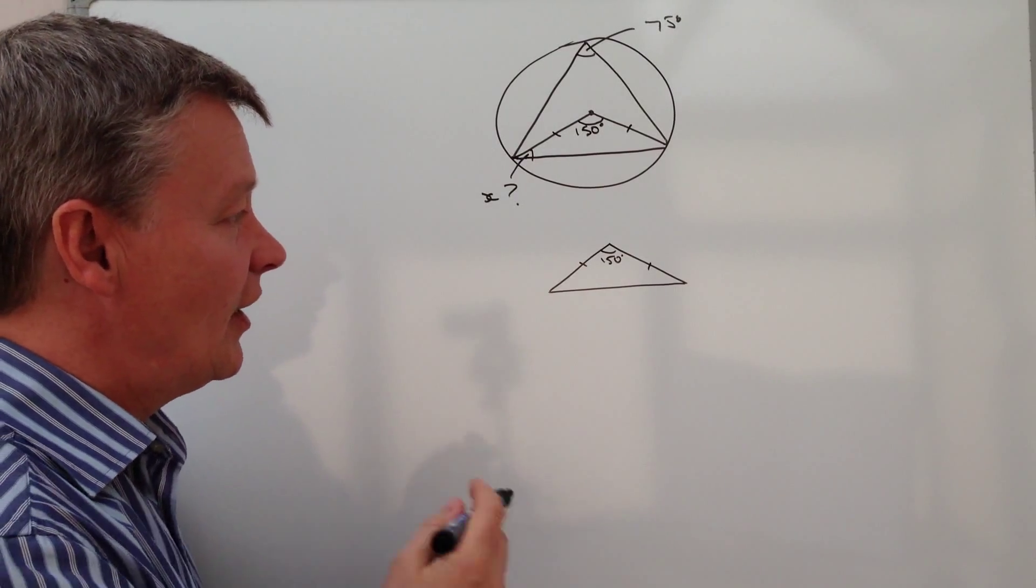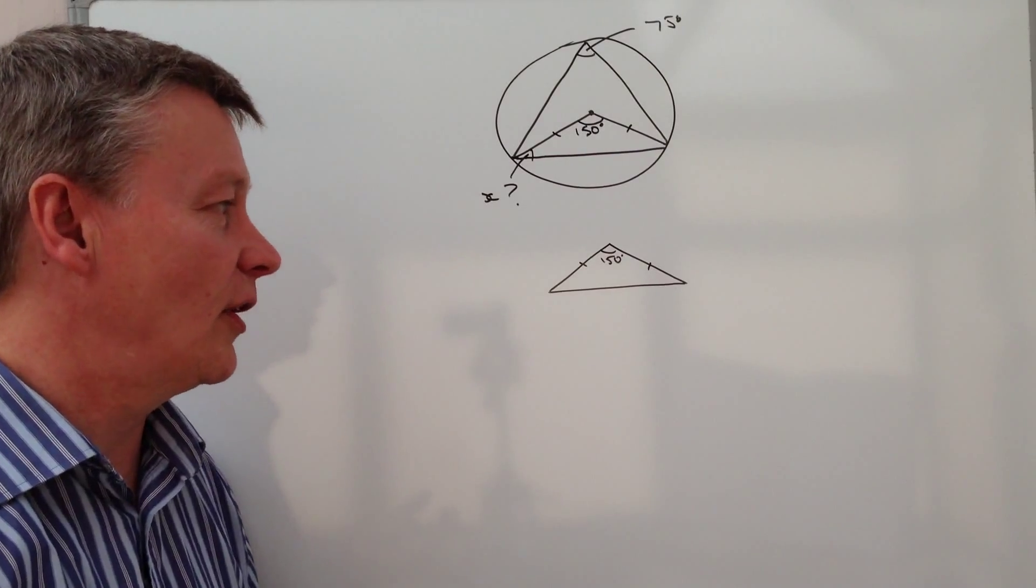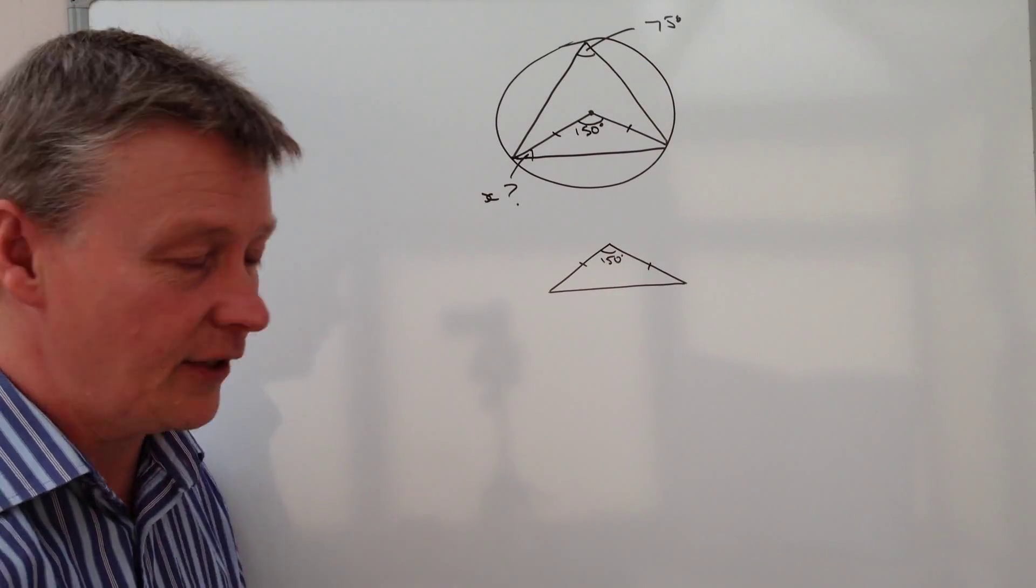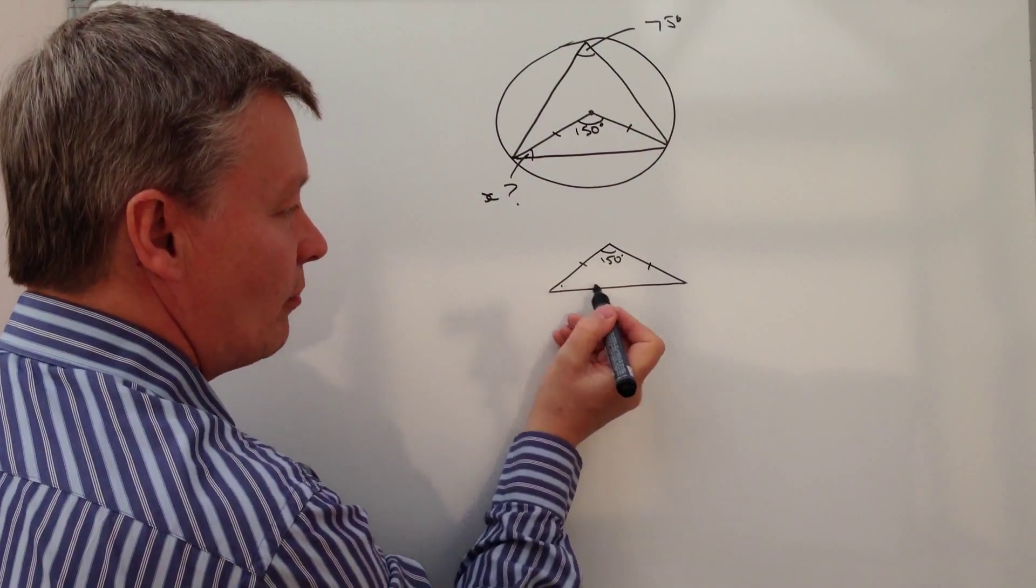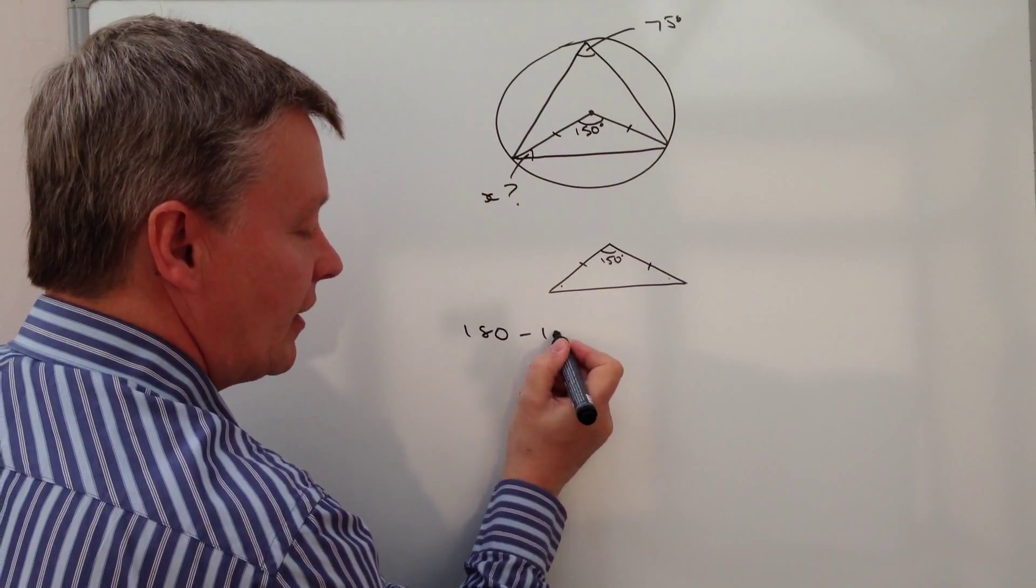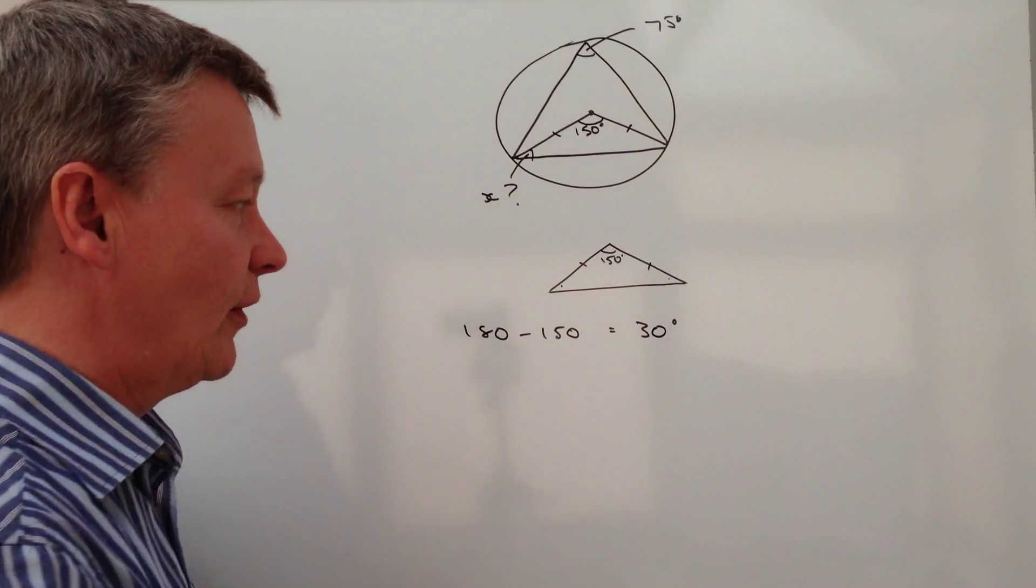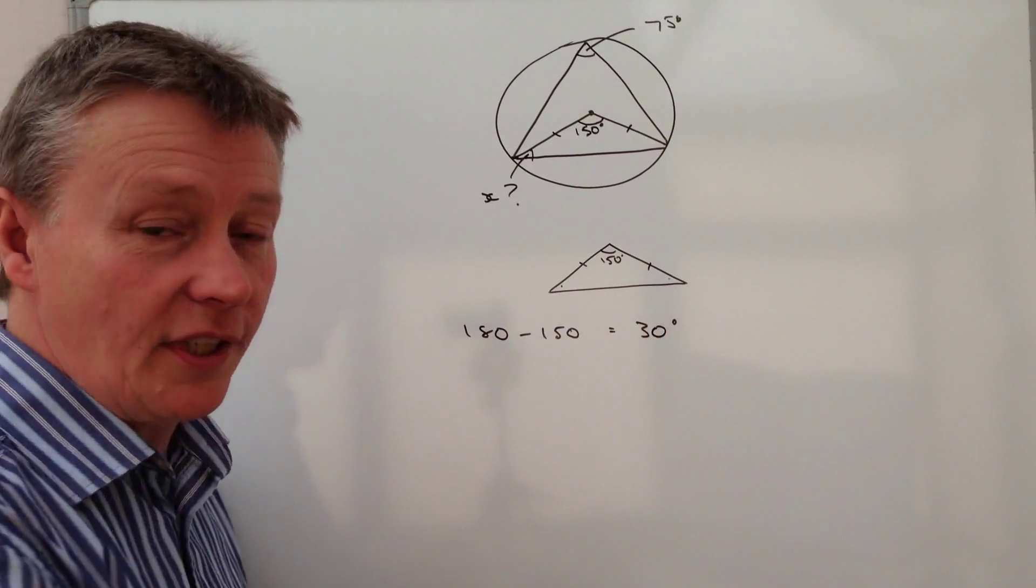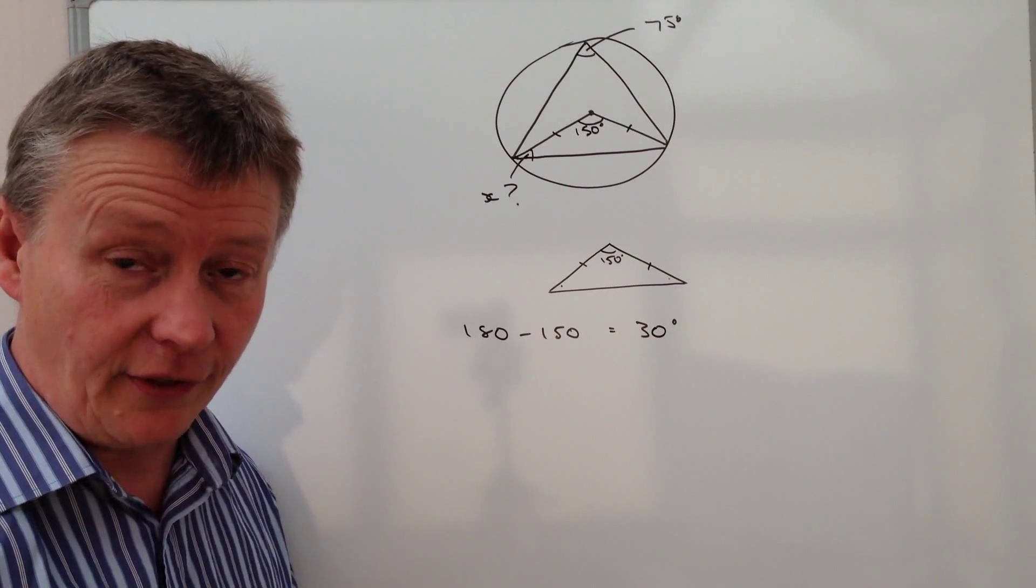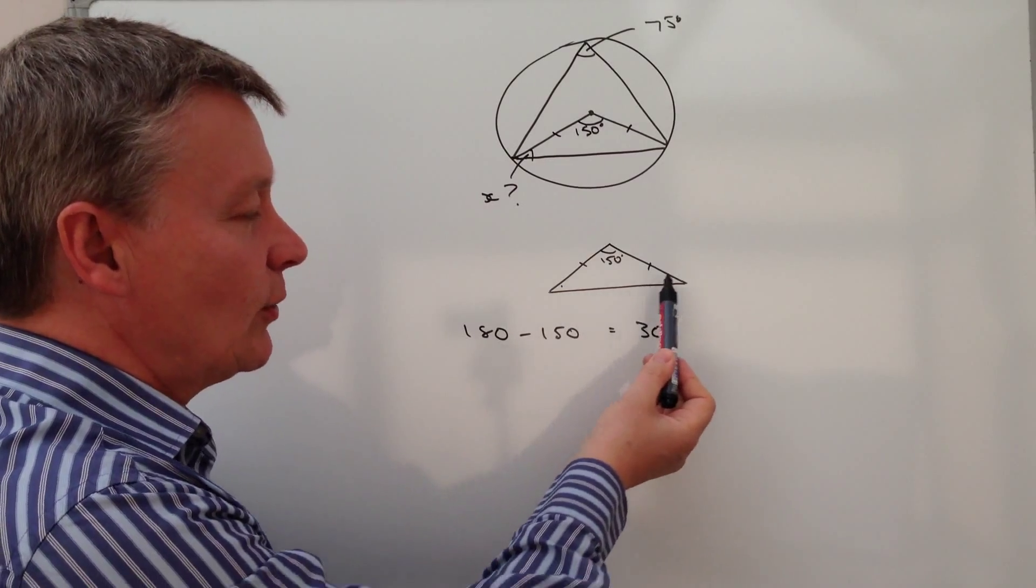Well, if that is the case, then the internal angles of an isosceles or any triangle add up to 180 degrees, so the sum of these two angles is going to be 180 minus 150, so that's going to be equal to 30 degrees. So both of those total together are going to be 30 degrees, and they're going to be equal to each other.